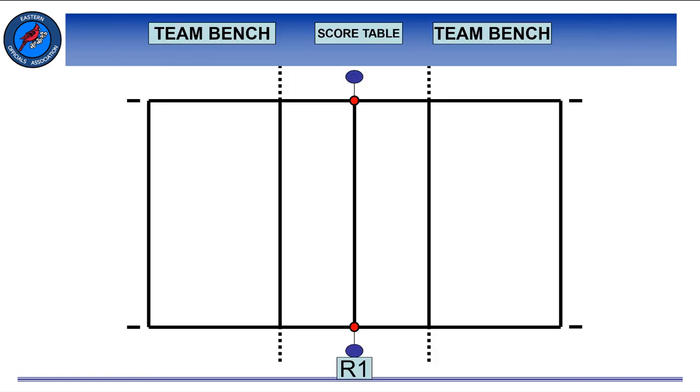A rule, believe it or not, is that a scoreboard should be visible to spectators, officials, and teams. We need to check the officials table, that it has adequate room for our scorer, our libero tracker, our timer, etc., and that it's placed properly on the opposite side from the first referee and far enough away from the sideline.